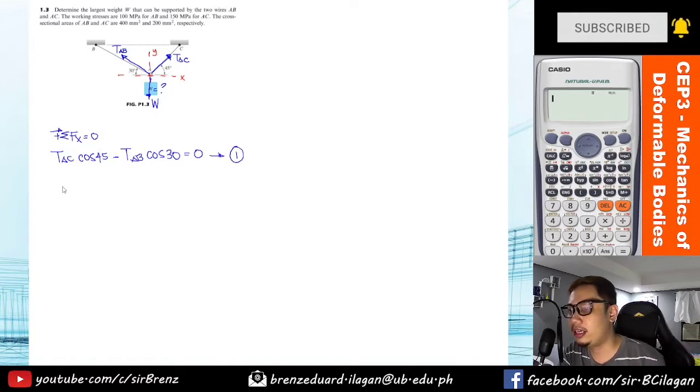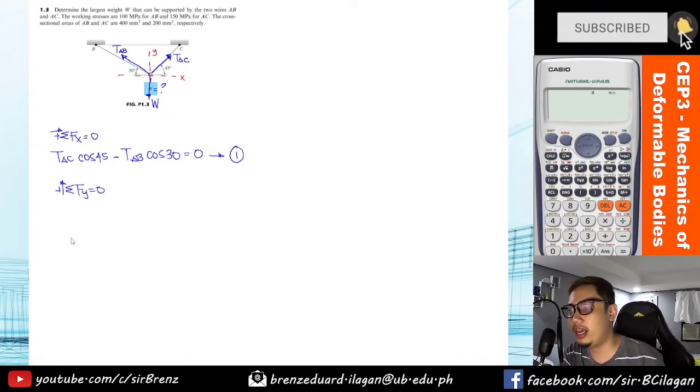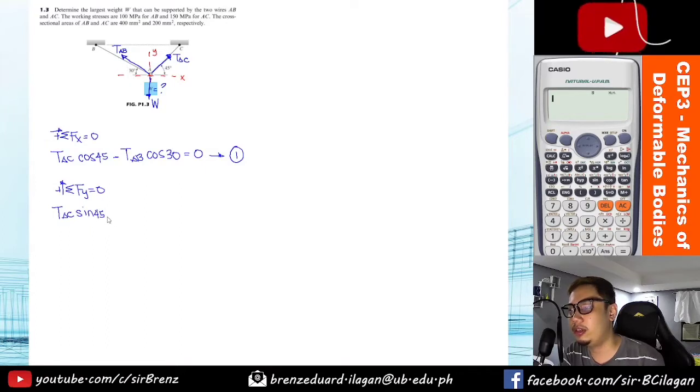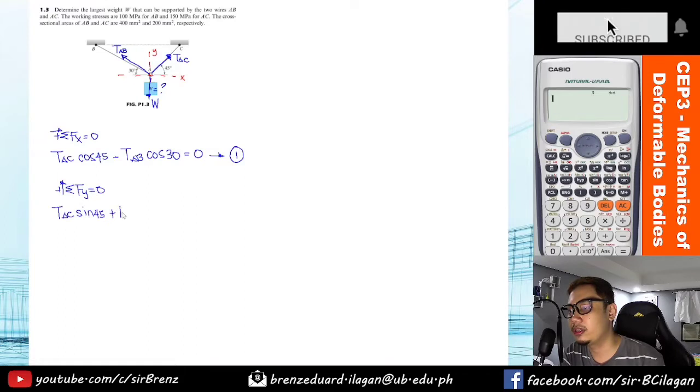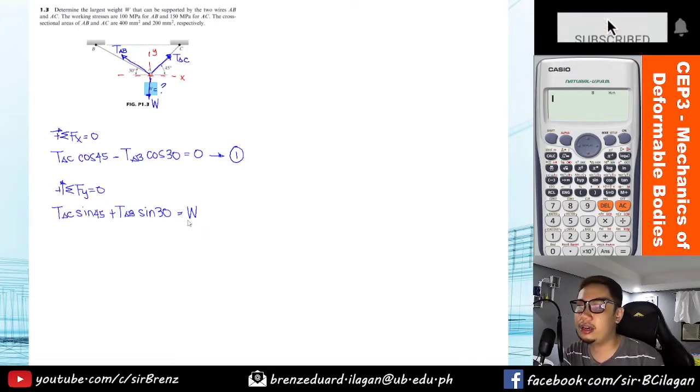The next equation will be summation of forces y, assuming upward direction as positive. Since the y component is upward, we'll make upward positive. Take summation of forces y, so we will have TAC sine 45, and AB will be TAB sine 30, and then minus W. I'll transpose it so it becomes positive, or that will be equals to W.